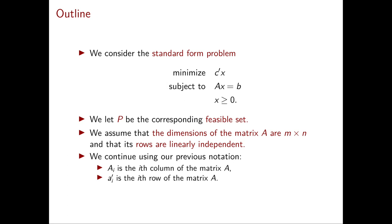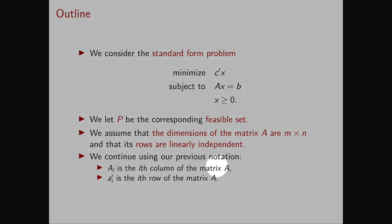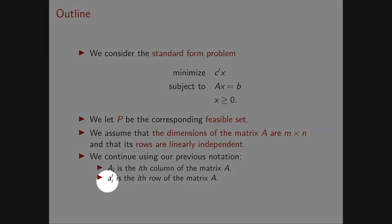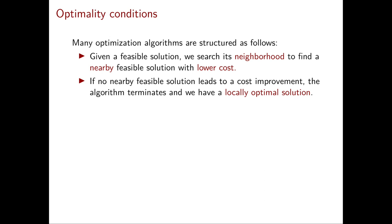We will also keep using our previous notation. In particular, capital A_i is used to denote the i-th column of the matrix A, and A_i transposed is the i-th row of the matrix A. We are now ready to dive into optimality conditions. Many algorithms to solve optimization problems have a very similar structure: they are iterative, and at every iteration they have a feasible solution and they search for a better one.